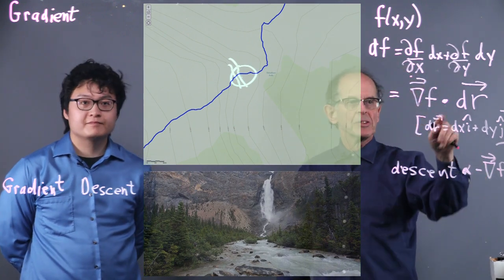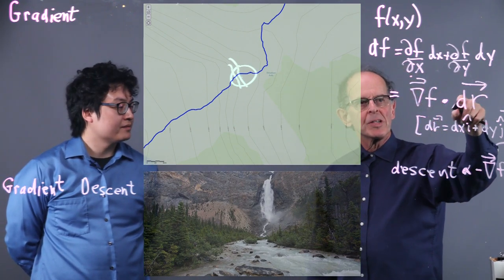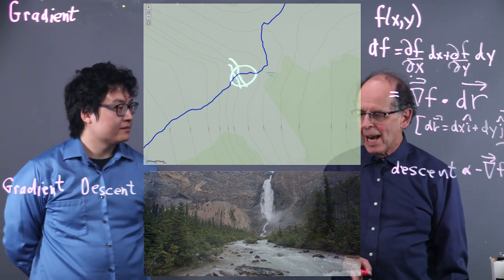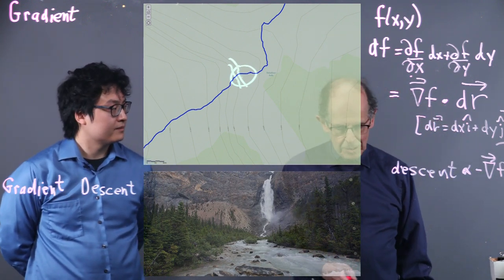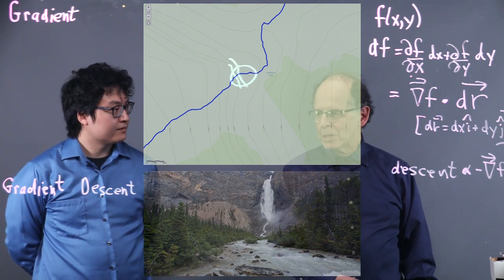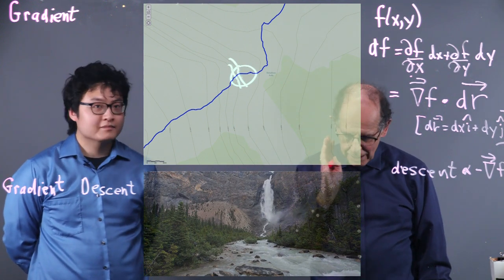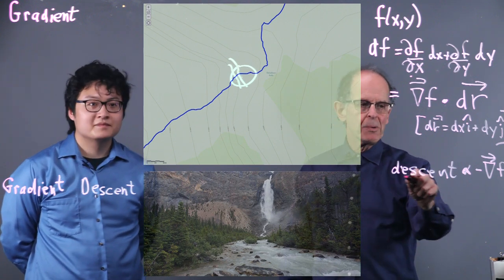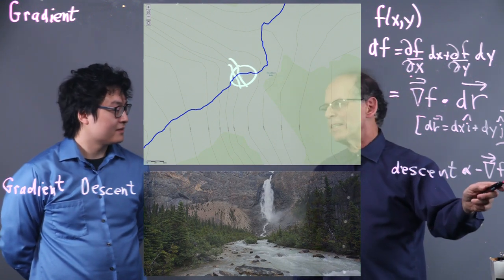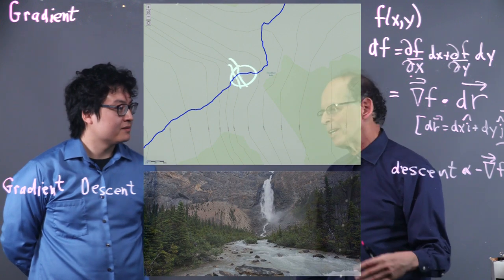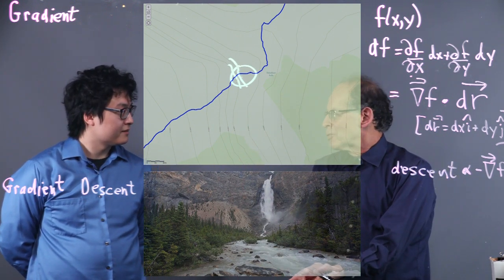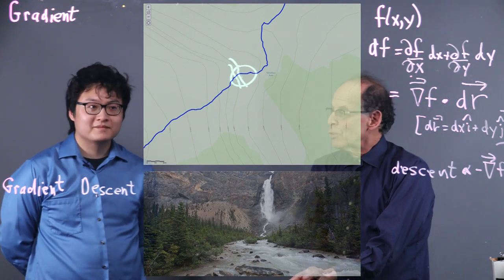So returning to this, we can see that this gradient of F gives us a directionality, if we make it a unit vector, on which direction we should move so that we get the maximum descent. And that's the key point. And we use that in geometrical analysis, like finding the minimum of a function that's given by a bowl.